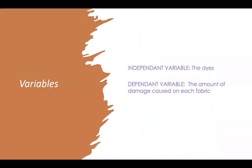Here are my variables. The independent variable, or the variable that stayed the same, are the dyes. The dependent variable, or the variable that changed, is the amount of damage caused on each fabric.